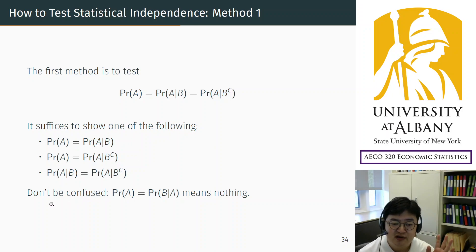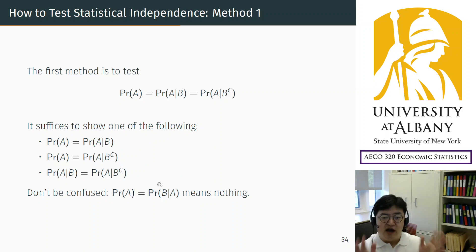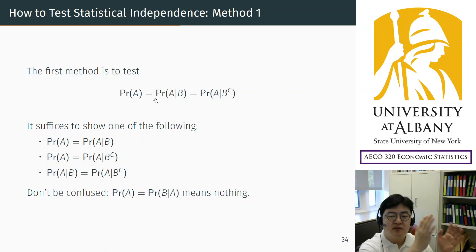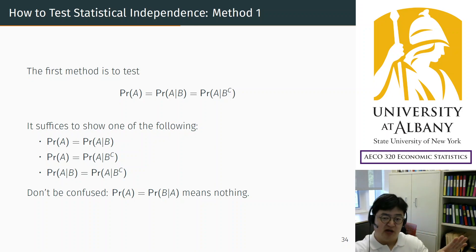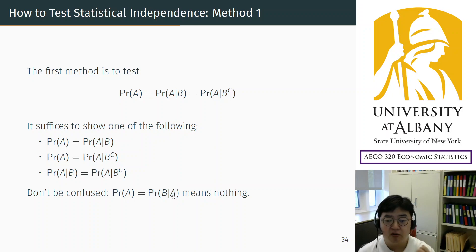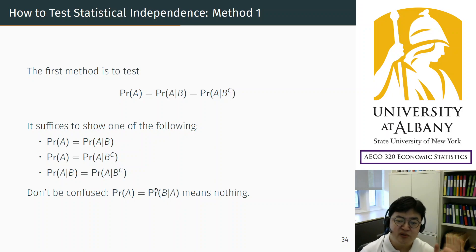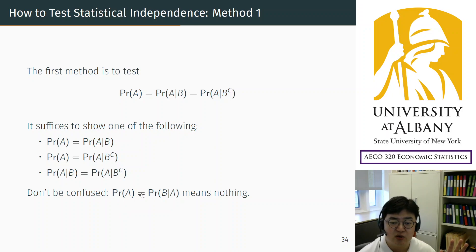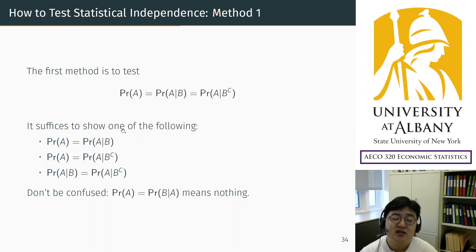A typical confusion and typical mistake here is using the wrong condition. The idea is to test if the probability of A changes when B happens. So you keep the probability of A as the main event and change the condition. Don't confuse this with probability of B given A, which has nothing to do with the unconditional probability of A. If you are careful about this, it is pretty straightforward — just calculate two probabilities and check if they are the same.